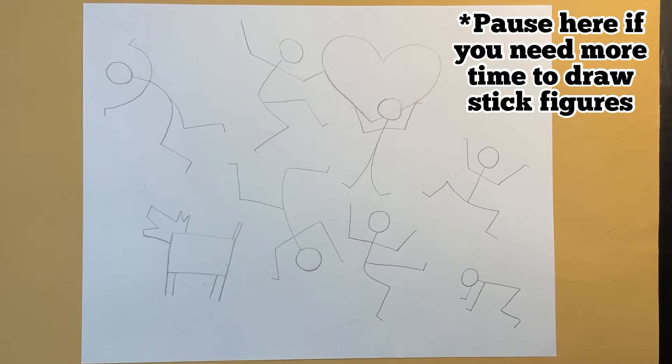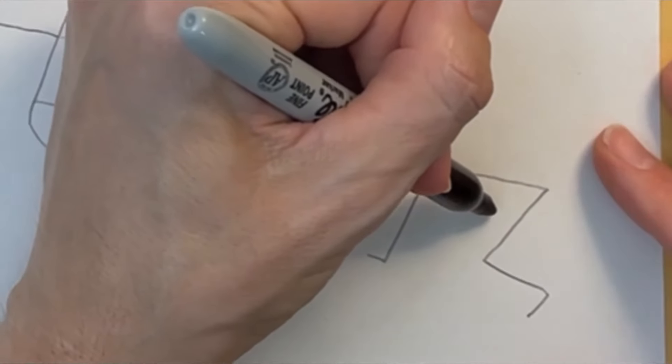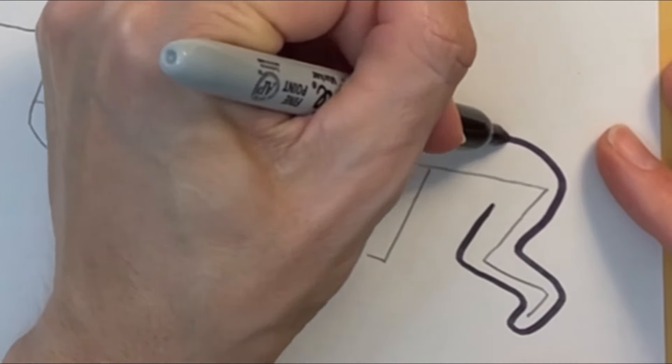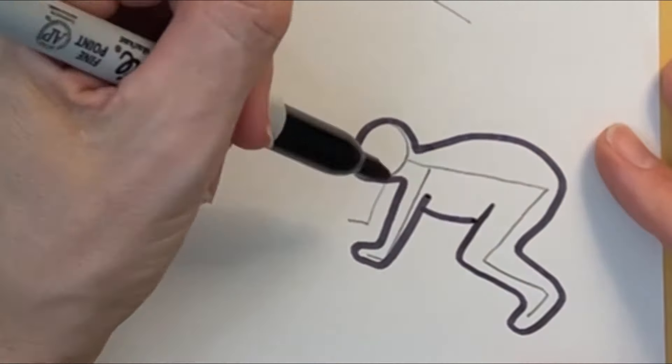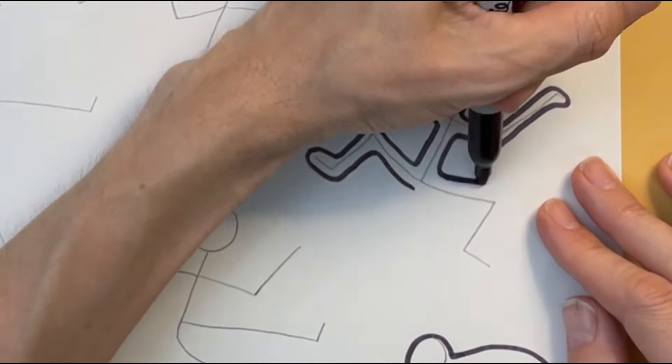Now here's where the magic happens. I'm going to take a sharpie and trace a bubble shape around the stick figures. See how I'm rounding the back and the belly of the baby so it looks a bit more natural. Now I'm tracing around each stick figure.